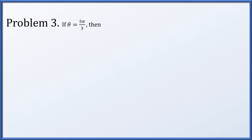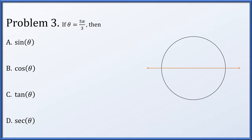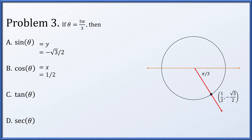In problem 3, theta is given to be 5π over 3. We're going to find exact values for the sine, cosine, tangent, and secant of the angle. Here is our unit circle with the x-axis. Now 5π over 3 is actually reasonably close to 2π — in fact, it's π over 3 away. This is our reference angle, the acute angle formed with the x-axis. Looking up an angle of π over 3, we get an x coordinate of 1/2 and a y coordinate of √3 over 2. But since we're in the fourth quadrant, we make our y coordinate negative. The sine of the angle is the y coordinate, which is −√3/2. The cosine is the x coordinate, which is exactly 1/2. The tangent is the ratio of y over x, which resolves to −√3. And the secant is 1 over the x coordinate, which is simply 2.